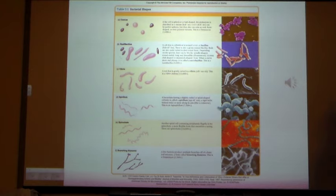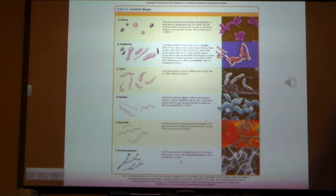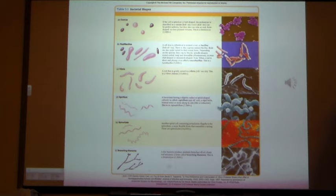We have these different shapes. You probably don't see branching filaments too often — these are some quasi-multicellular bacteria like Streptomyces that look like fungus. They're actually multicellular bacteria, and some bacteria do exist in multicellular form where the cells clump together.